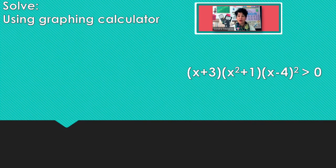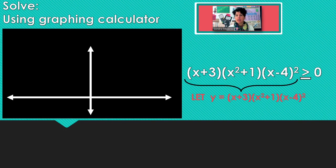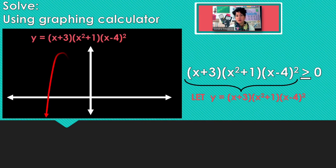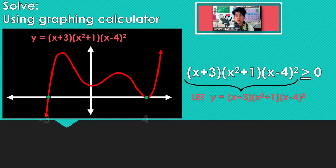Here's another one. The change: I'm saying greater than or equal to 0. You're going to let all of that be your y, graph it, and let the calculator find your x-intercepts. On Desmos you click those points on the x-axis; on a graphing calculator you use the zero feature.